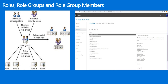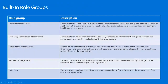Exchange Server includes several built-in role groups, each providing permissions to manage specific areas. Some role groups may overlap with others. Built-in role groups include Discovery Management, Organization Management, Recipient Management, and Help Desk Management. Help Desk Management enables members to view and modify Outlook on the Web options for users in the organization. Organization Management members can view the properties of objects in the Exchange Online organization.